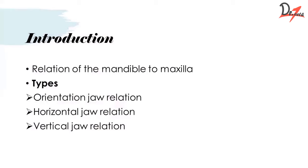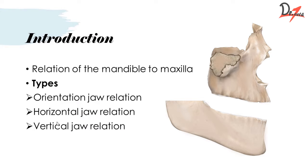So what is jaw relation? It is the relation of the mandible to the maxilla. The relation between these two structures is what we are going to record. There are three types of jaw relation which you need to record: orientation jaw relation, horizontal jaw relation, and vertical jaw relation.